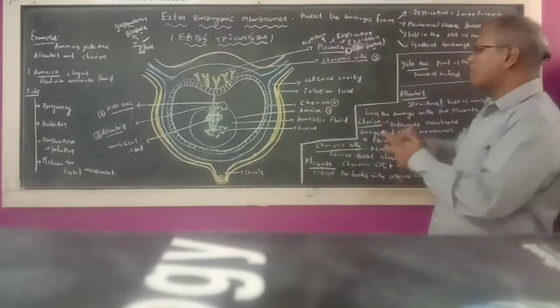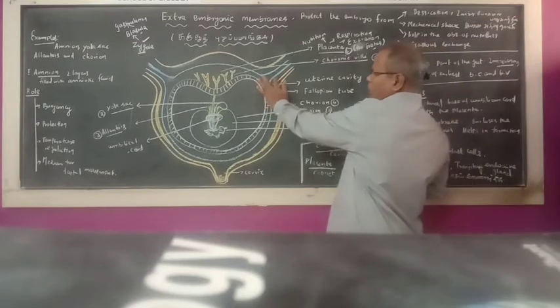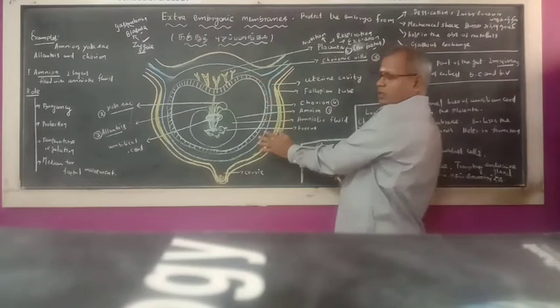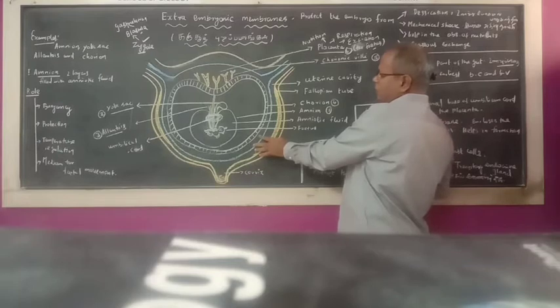Next is the uterus. The innermost mucus membrane of the uterus is said to be the endometrium, where the fertilized embryo is implanted.